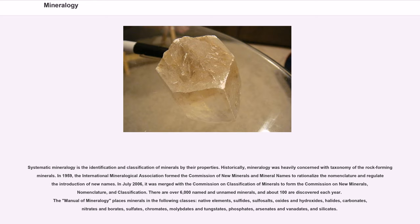There are over 6,000 named and unnamed minerals, and about 100 are discovered each year. The Manual of Mineralogy places minerals in the following classes: native elements, sulfides, sulfosalts, oxides and hydroxides, halides, carbonates, nitrates and borates, sulfates, chromates, molybdates and tungstates, phosphates, arsenates and vanadates, and silicates.